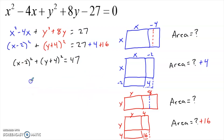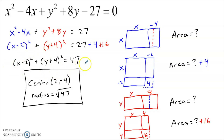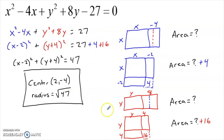Now we have the equation of the circle in center-radius form. The center is (2, -4) and the radius is the square root of 47. By completing the square twice, we've converted the standard form into center-radius form — which is how we always want it, because we can easily identify the center, radius, graph the circle, and answer any other questions.